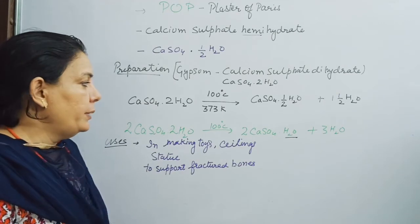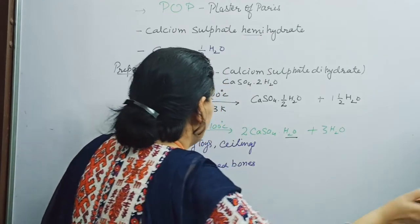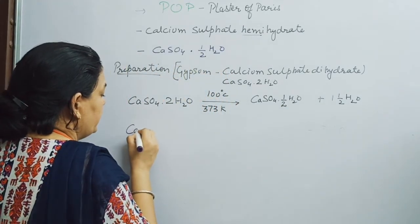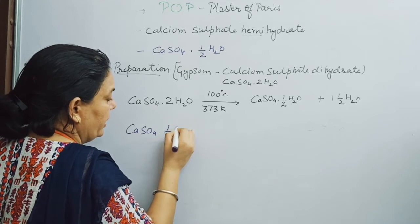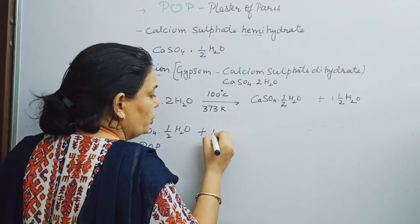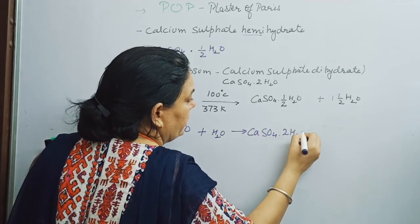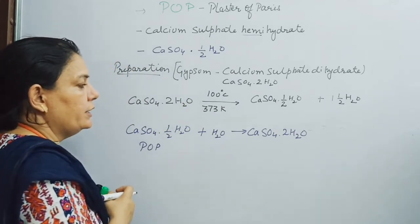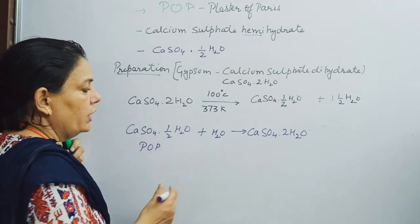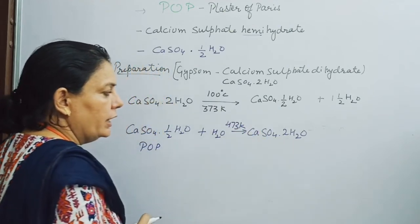When Calcium Sulfate Hemihydrate — that is Plaster of Paris — is kept in the open, it reacts with water molecules and there is formation of Calcium Sulfate Dihydrate, which is Gypsum. When Calcium Sulfate reacts with water at around 373 Kelvin temperature, it forms Calcium Sulfate Dihydrate.